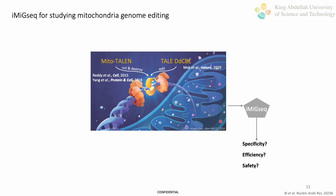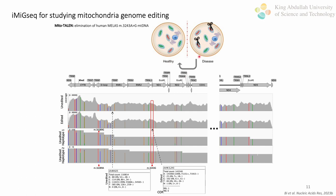IMIC-seq can study the outcome of mitochondrial genome editing tools in an unbiased way. In this example, a mitochondrial-targeted nuclease was used to eliminate a mutation causing Miller syndrome in iPSC cells. IMIC-seq verified the elimination of the mutation. However, it also uncovered an unexpected and dramatic increase of another mutation. Thanks to the haplotypes resolved by IMIC-seq, we understand that this new mutation is linked to the wild-type Miller's allele and exists at low frequency before editing. This example shows the power of IMIC-seq in evaluating the safety of mtDNA editing.